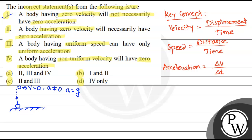Second statement: a body having zero velocity will necessarily have zero acceleration. If zero velocity bho hai, acceleration zero hona jaruri hai kya? No, jaruri nahi hai. So this statement is wrong.